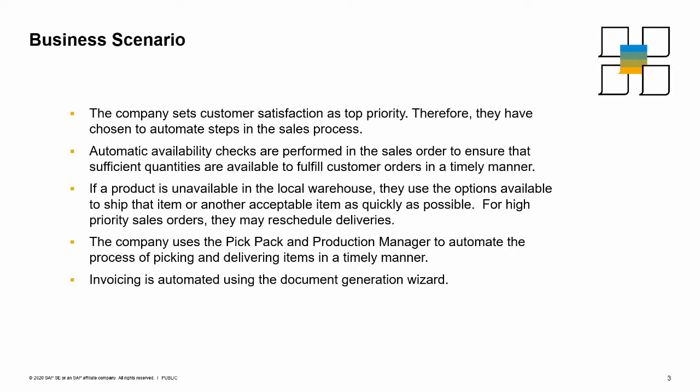The company sets customer satisfaction as top priority. Therefore, they have chosen to automate steps in the sales process. Automatic availability checks are performed in the sales order to ensure that sufficient quantities are available to fulfill customer orders in a timely manner. If a product is unavailable in the local warehouse, you use the options available to ship that item or another acceptable item as quickly as possible.